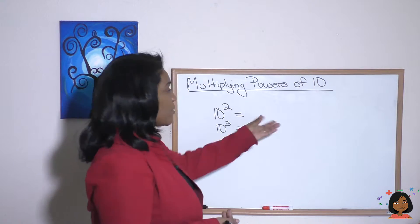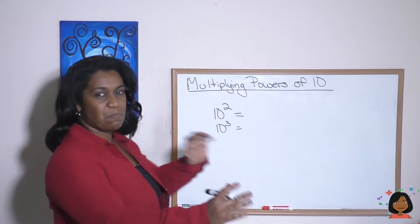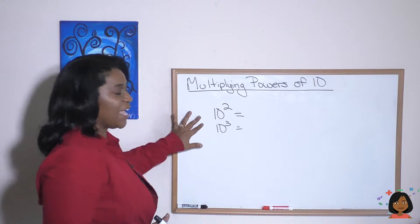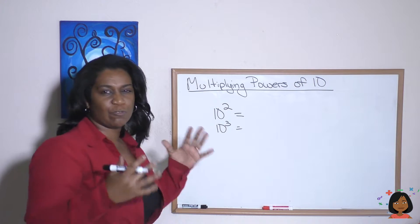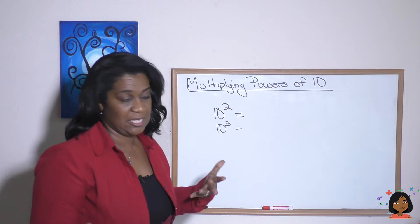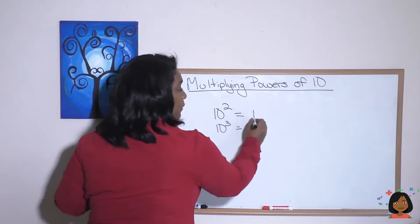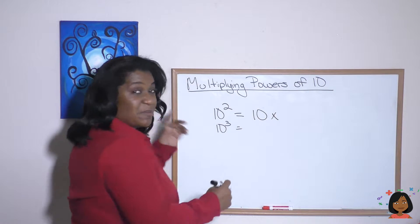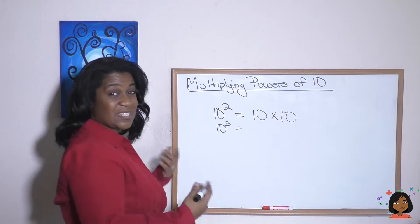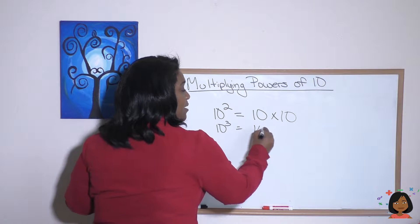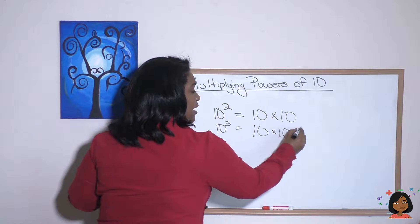Let's start with the first one, powers of 10. So let's just back up for a second. Here I have 10 squared and 10 to the third, 10 cubed. I want to remind you what this actually means. So 10 squared means 10 times itself two times, 10 times 10. And what does 10 to the third mean? It means 10 times itself three times.